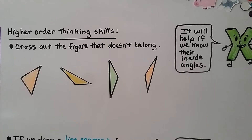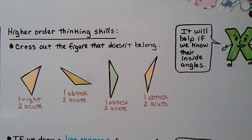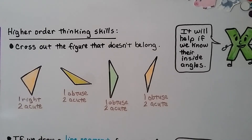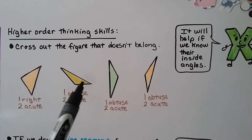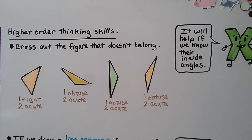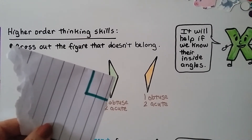Now let's try using some higher-order thinking skills. We need to cross out the figure that doesn't belong, and it will help if we know what their inside angles are. If we're not sure, we can use the corner made from our paper in the last video. This one has one right angle and two acute angles. We can line up the corner of our paper to see that it makes a nice square corner. This one has one obtuse angle — greater than a right angle — and two acute ones. Here we have one obtuse and two acute, and here we have one obtuse and two acute. These all have one obtuse and two acute angles, but this one has one right angle and two acute, so this is the one that doesn't belong. By using our square corner, we could be sure that the others are obtuse angles.